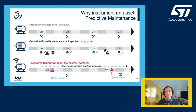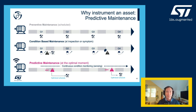We can now instrument every asset with sensors and communications in order to profile normal behavior and detect or predict early failures in the machine lifecycle. This allows us to properly schedule maintenance, resulting in maximum availability for the asset. Also, early detection often results in avoiding expensive repairs and a longer life expectancy of the asset itself.